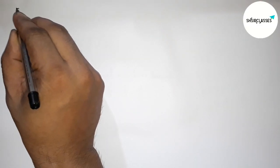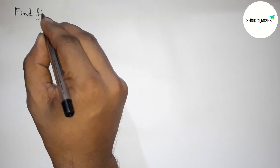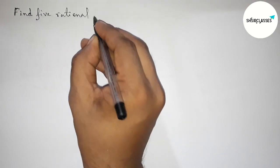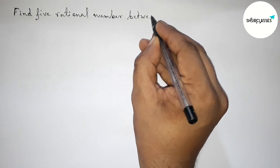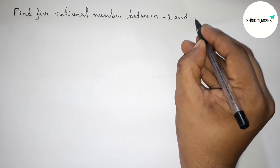Hi everyone, welcome to SI Share Classes. Today in this video we have to find five rational numbers between minus one and one in an easy way. So please watch the video till the end. So let's start the video.